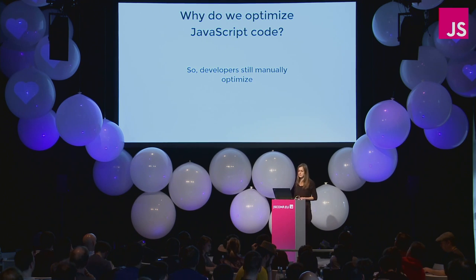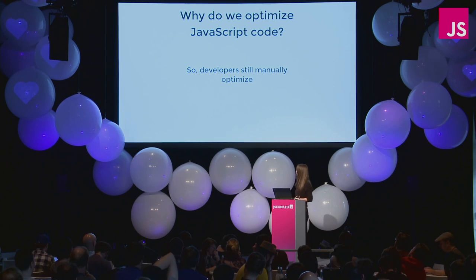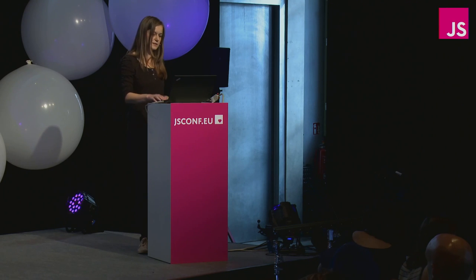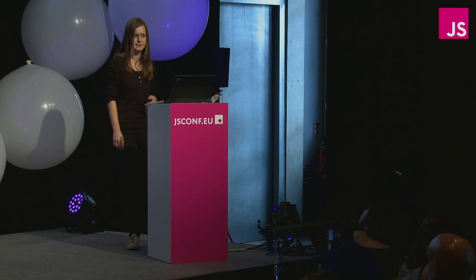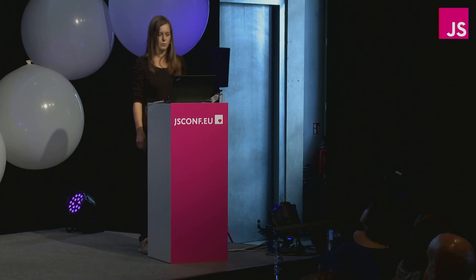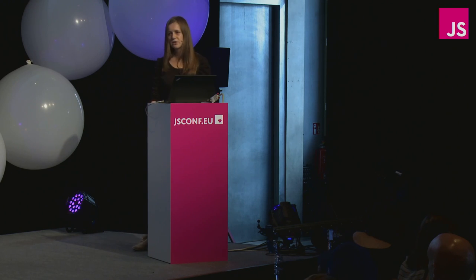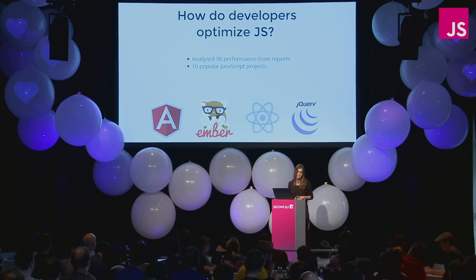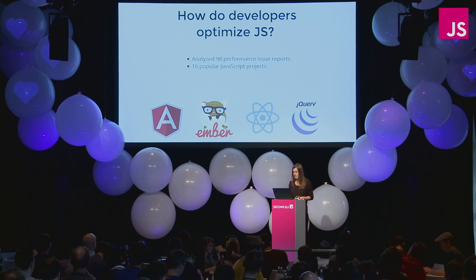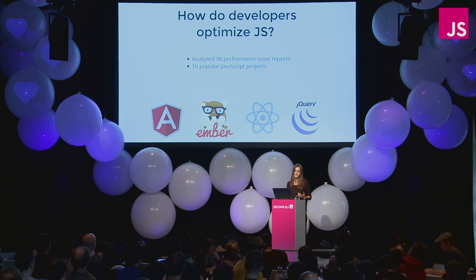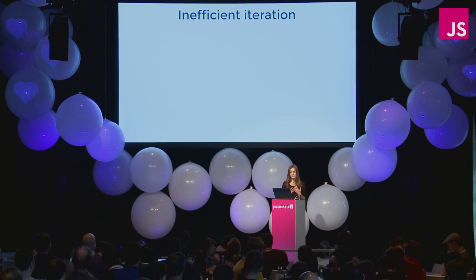Because JavaScript performance is important and optimizations are limited, developers still manually optimize their code. To understand what types of optimizations developers apply, we analyzed performance issue reports from popular JavaScript projects — including Angular, Ember, React, jQuery, underscore, and many more — because for those projects, performance is a significant concern. We analyzed and successfully reproduced 98 performance issues in total. Now I'm going to give you some examples of real-world JavaScript performance issues and how developers fix them, starting with the most prevalent ones.